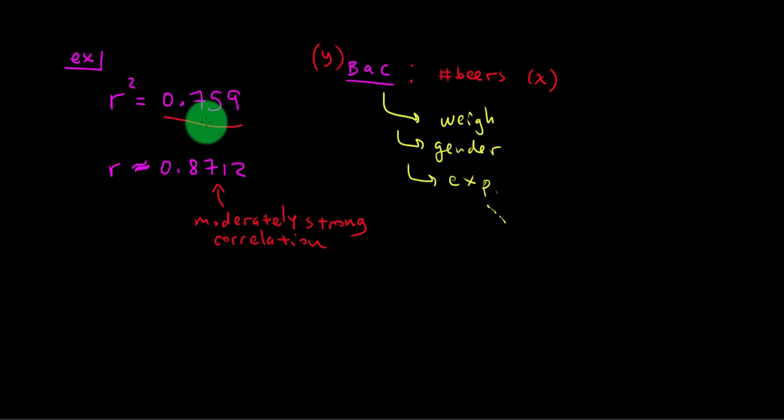So that's how we're going to calculate the correlation coefficient and the r squared value using Google Sheets. So that will conclude this video. And in the next video, we'll do an example from the homework.